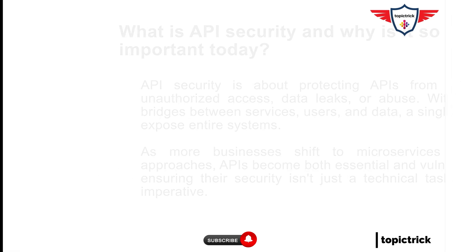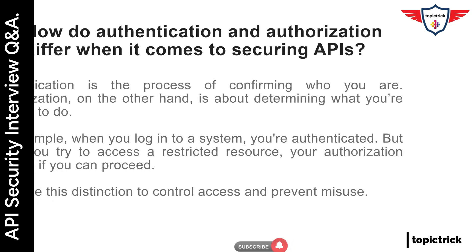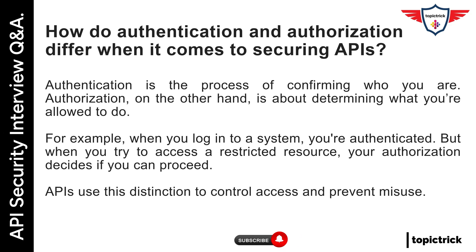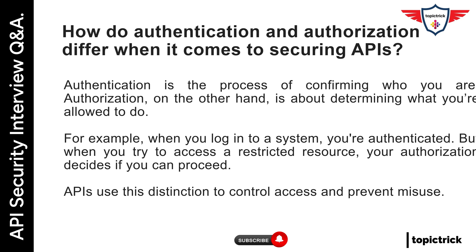Next question: How do authentication and authorization differ when it comes to securing APIs? Authentication is the process of confirming who you are. Authorization, on the other hand, is about determining what you're allowed to do. For example, when you log into a system, you're authenticated. But when you try to access a restricted resource, your authorization decides if you can proceed. APIs use this distinction to control access and prevent misuse.